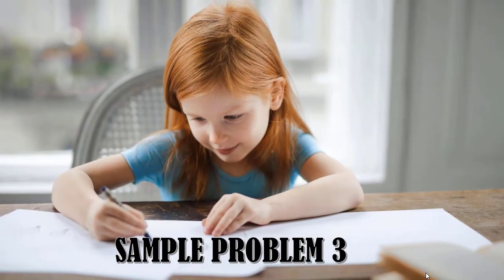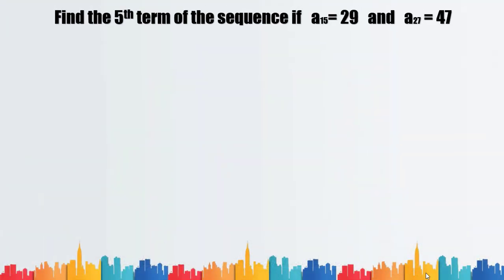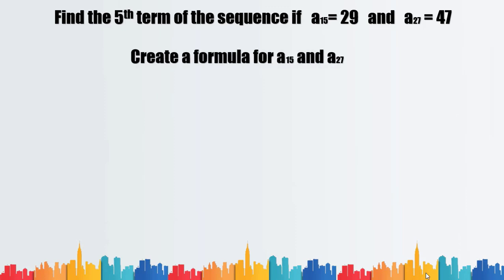Problem number three: find the fifth term of the sequence if a sub 15 is equal to 29 and a sub 27 is equal to 47. To solve this problem, we will first create equations for a sub 15 and a sub 27.